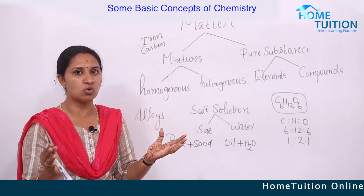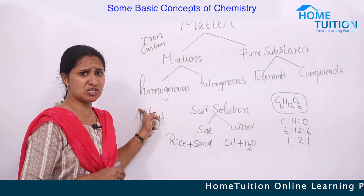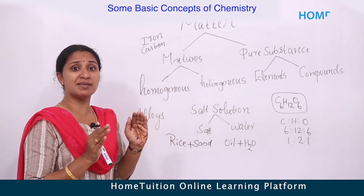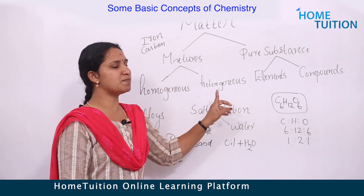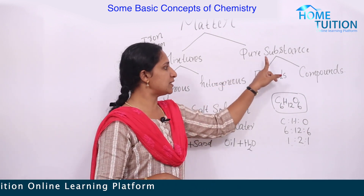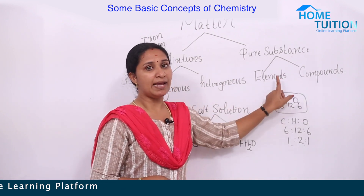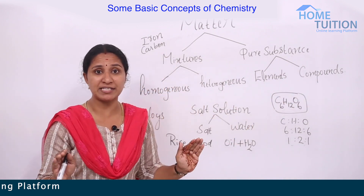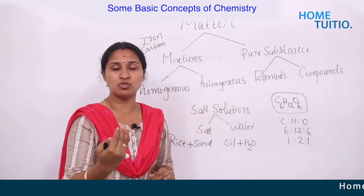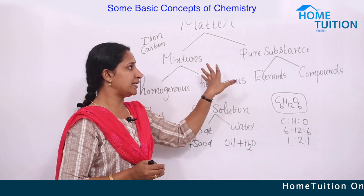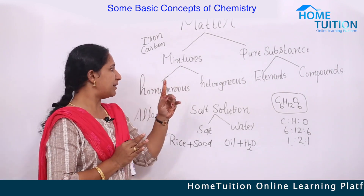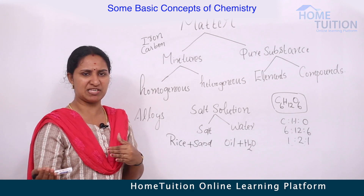To recap: matter is classified as mixtures and pure substances. Homogeneous mixtures have uniform composition; heterogeneous mixtures have non-uniform composition. Elements consist of the same type of atoms; compounds are elements combined in a fixed ratio. In mixtures, components can be separated by physical methods, and no chemical bonds form between particles.